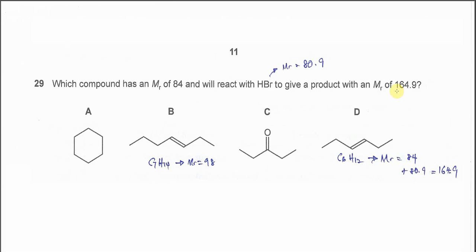So first we need to identify which compounds will react and which will not. The compounds that will react with HBr are B and D.